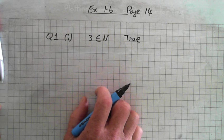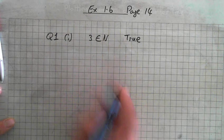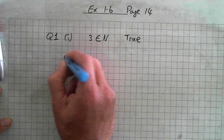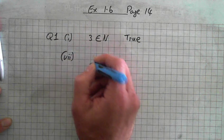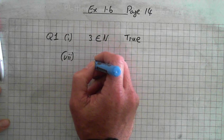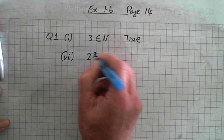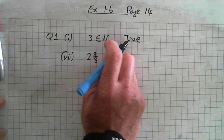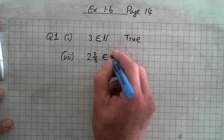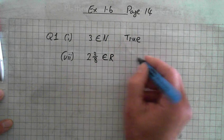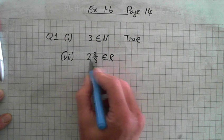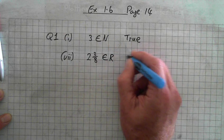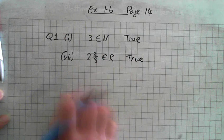Another example, number VII: Is 2 and 3 eighths an element of the real numbers? Yeah, real numbers include everything — decimals, fractions, everything. So it's true.